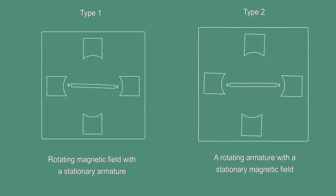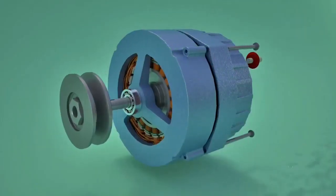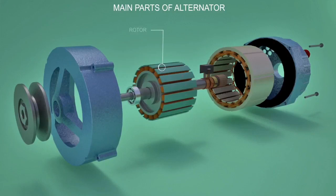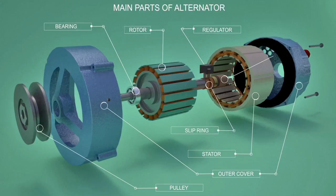Type 2, a rotating armature with a stationary magnetic field. Most alternators use a rotating magnetic field with a stationary armature. Main parts of the alternator are rotor, stator, outer cover, pulley, regulator, bearing, slip rings, and DC generator.